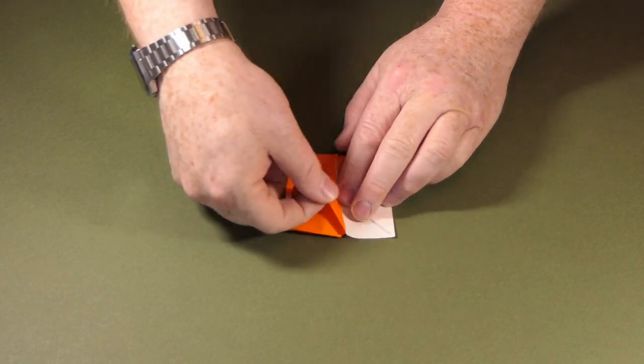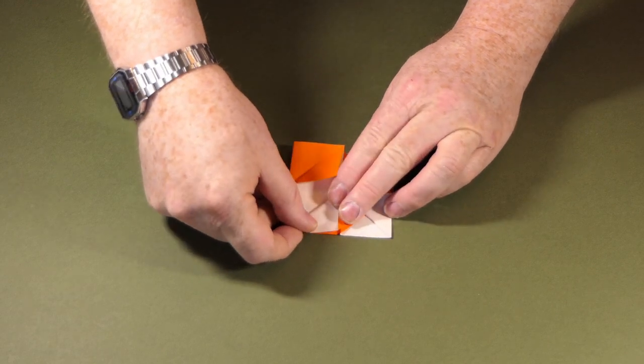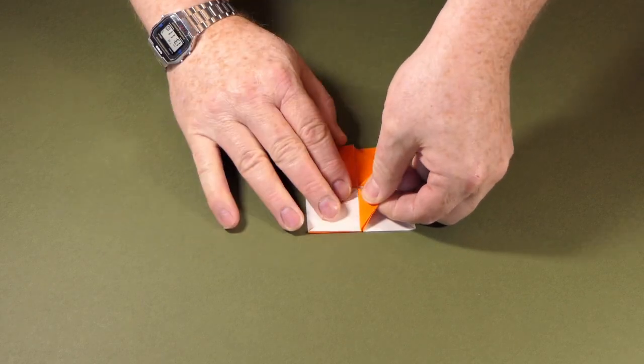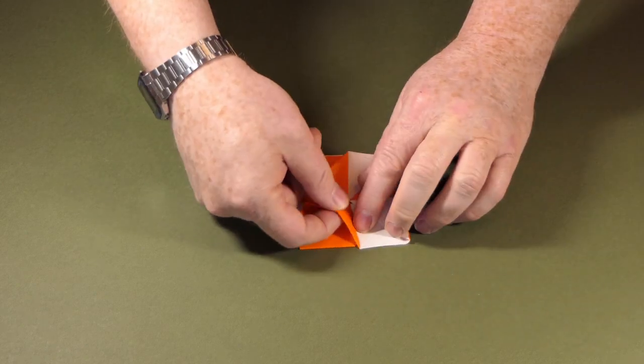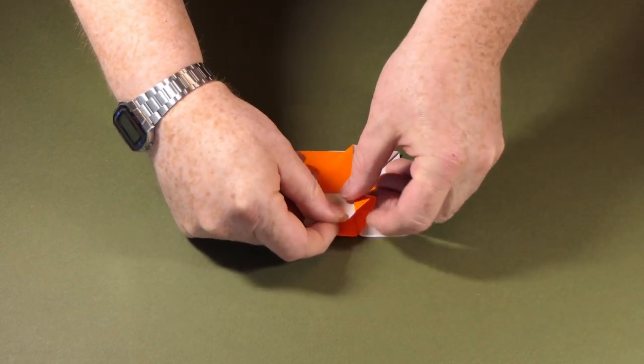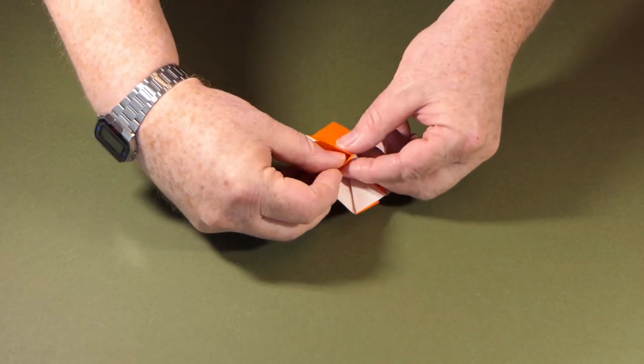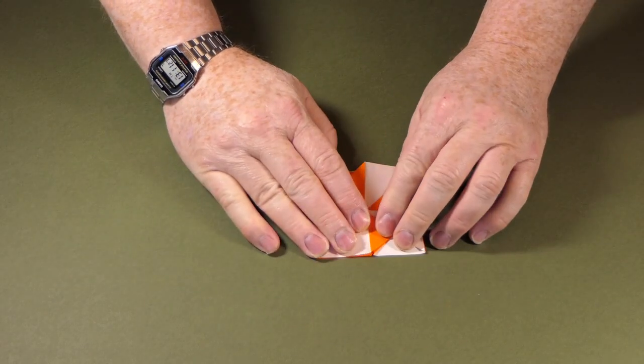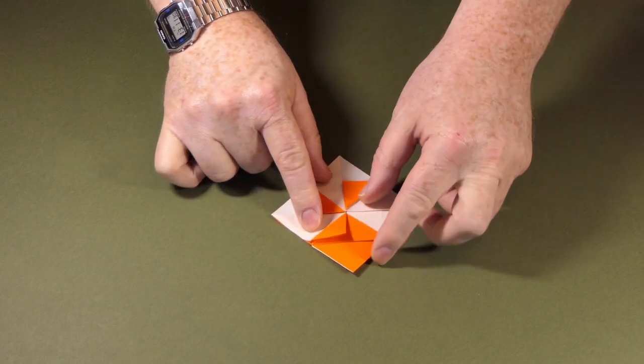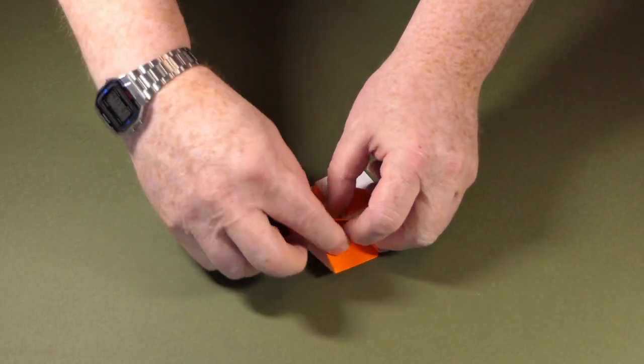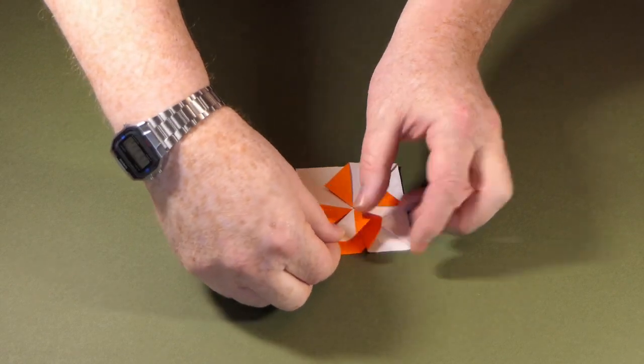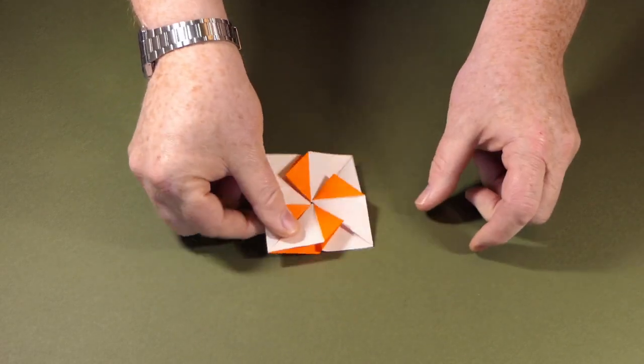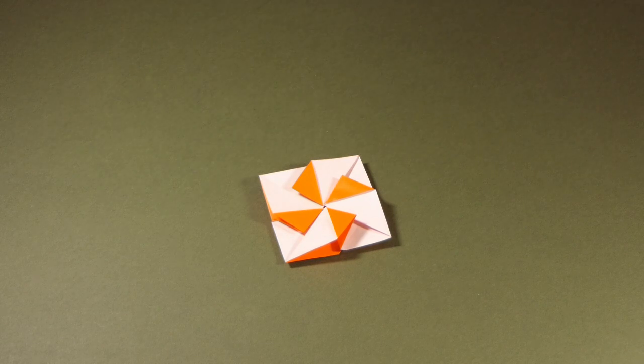Take the next pocket, we'll squash that the same way. Two. Three. And the final one is slightly hidden, so I just adjust the layers as I make this last squash fold. And that is the pinwheel variant of the quilt module.